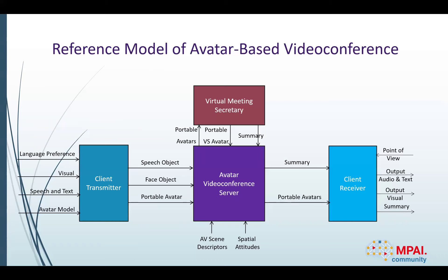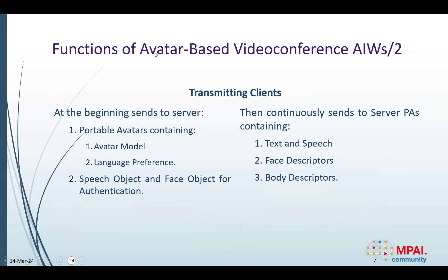This is the general schematic representation of the reference model of an avatar-based videoconferencing system, which comprises four key components designed to manage the virtual meeting: the transmitting and receiving clients, the videoconferencing server, and its virtual meeting secretary, which I will now describe in detail.